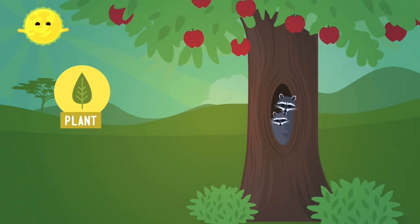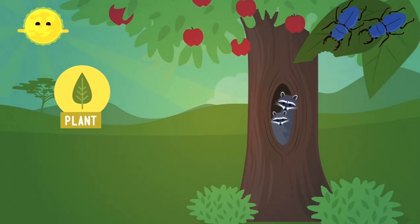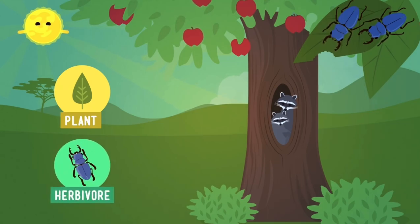So what about the animals in this scene? Since the insects are making a salad out of the tree's leaves, it's safe to guess that they're herbivores, plant eaters.